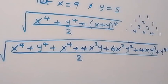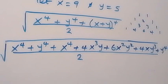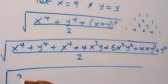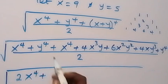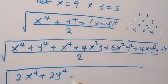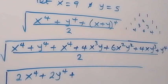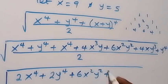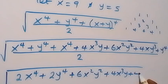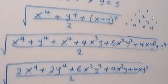From here we can collect like terms. We have x to power 4 and x to power 4 — that's 2 of them. So this becomes square root of 2x to power 4, plus 2y raised to power 4, then plus 6x squared y squared, then plus 4x cubed y, plus 4xy cubed, all over 2.